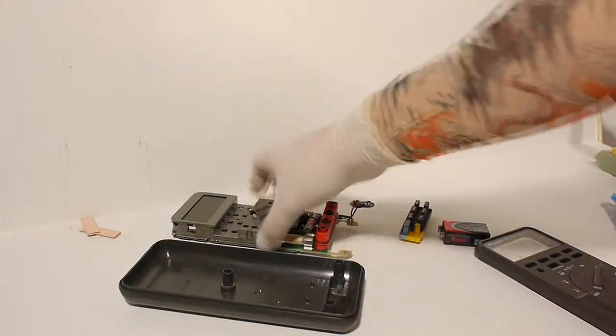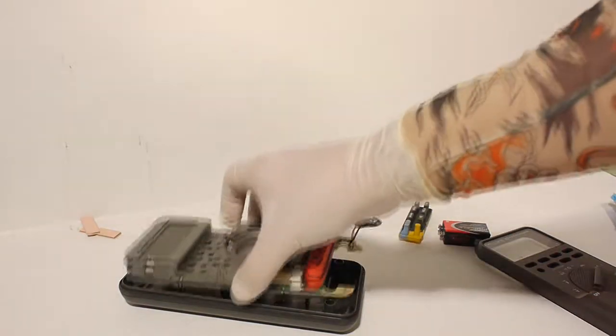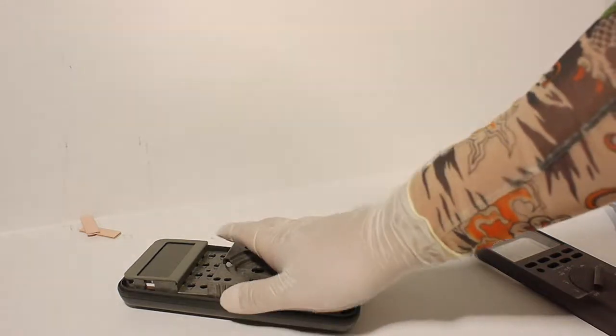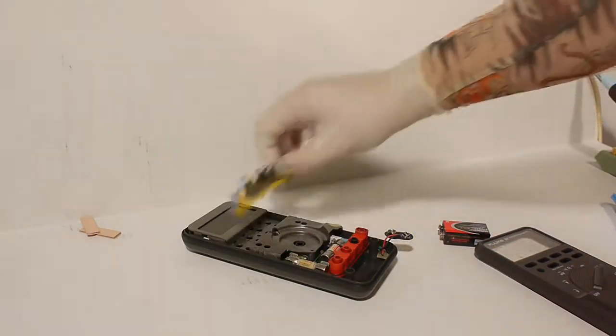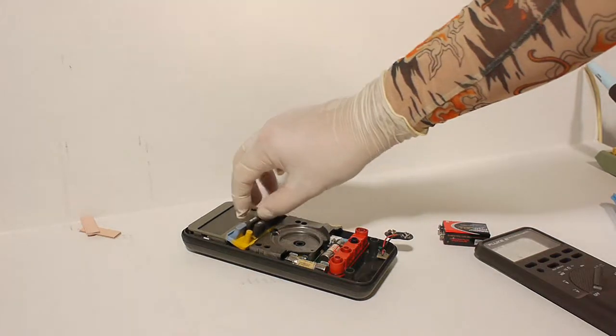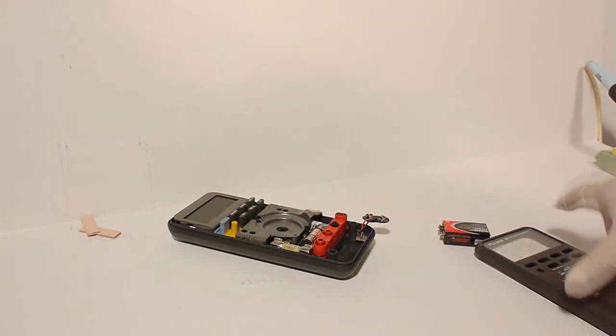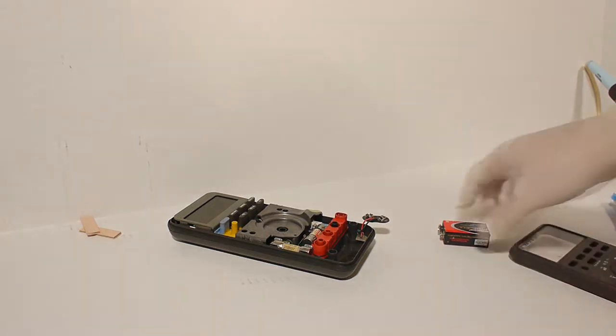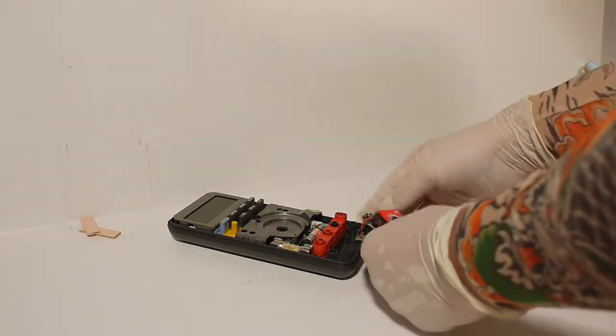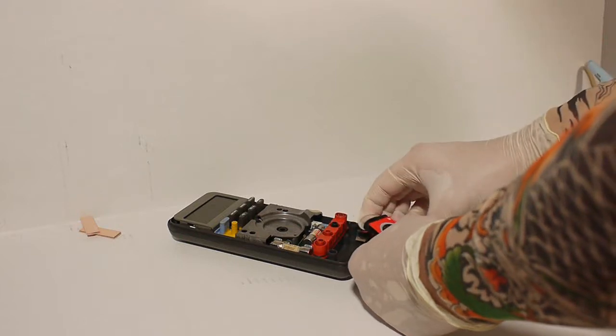Step thirteen. Place the main PCB into the bottom case. Step fourteen. Locate the soft keypad and place onto the main PCB. Step fifteen. Re-install your nine volt battery.